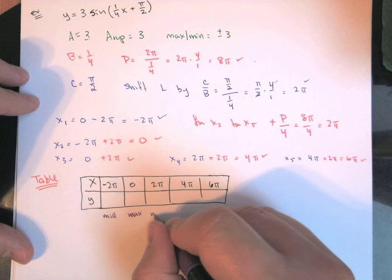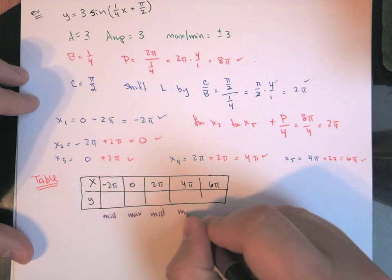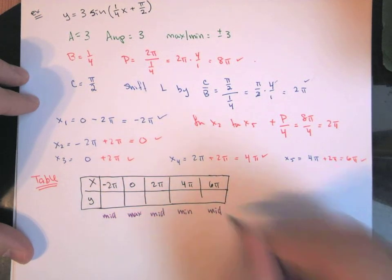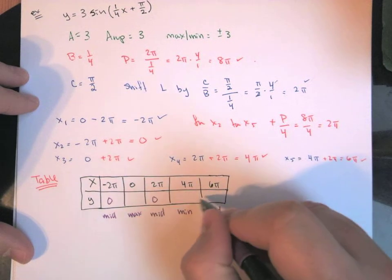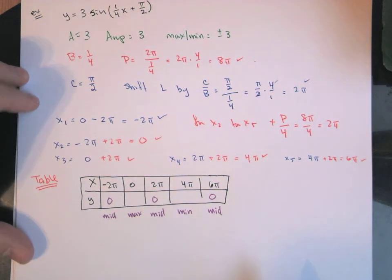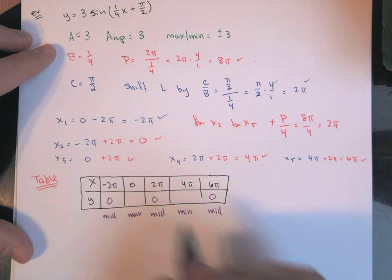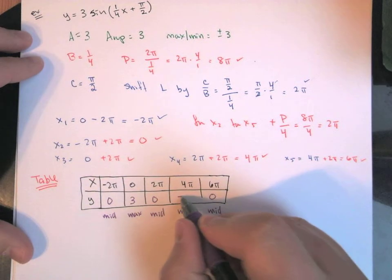Pattern, same as it's been: a middle, a max, back to the middle, down to a minimum, and we'll finish where we started in the middle. My middle value, 0, 0, 0, and then we said way back at the beginning our amplitude was 3, so we're going to have maximums and minimums at positive negative 3.